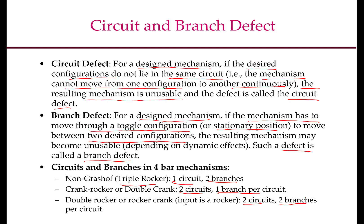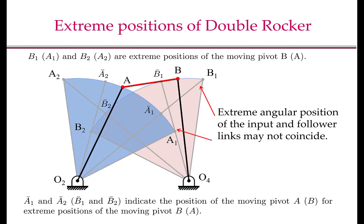Given this information, how do we develop a procedure to understand whether a given mechanism has circuit or branch defect? To answer that question, we first need to understand the extreme positions of a mechanism. We have already seen how to compute the extreme positions of a crank-rocker mechanism. We will now see how to compute the extreme positions of double-rocker and triple-rocker mechanisms. Consider the four-bar mechanism O2, A, B, O4, where B1 and B2 are the extreme positions of the moving pivot B, and A1 and A2 are the extreme positions of the moving pivot A.